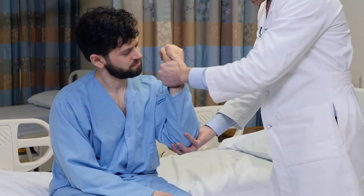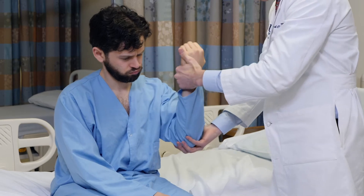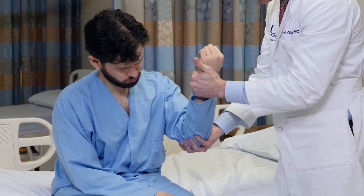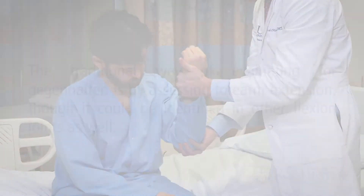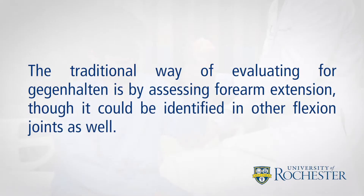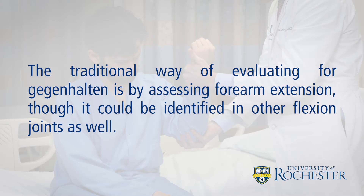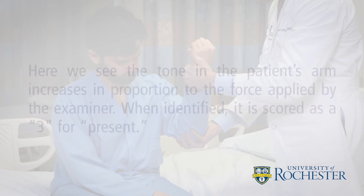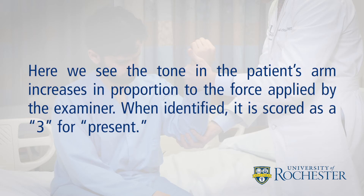The harder I pull, the stiffer it gets. The traditional way of evaluating for Gegenhalten is by assessing forearm extension, though it could be identified in other flexion joints as well. Here, we see the tone in the patient's arm increases in proportion to the force applied by the examiner.